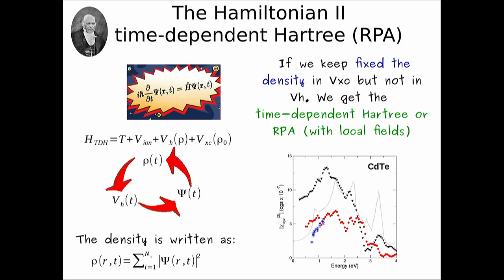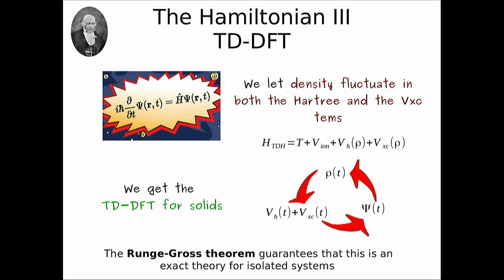Another level is time-dependent DFT: you start from the Kohn–Sham Hamiltonian but let the XC potential evolve in time. The wave function generates a new density, the density generates a new XC potential, and so on. These are the so-called local field effects. An example is second harmonic generation of cadmium telluride without and with local field effects compared to experiment — and it works.